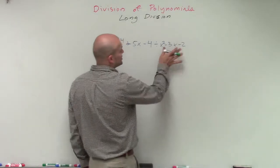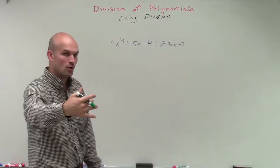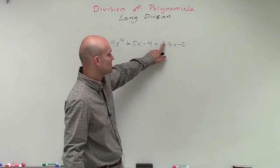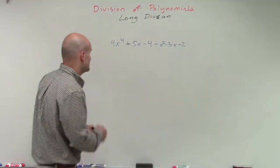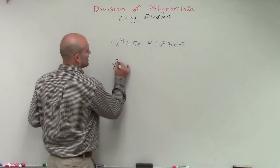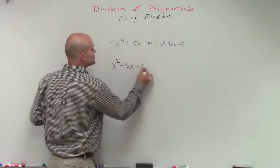The main important thing is we need to make sure our divisors are in descending order, right? You can see we have the highest exponent first, and then the next one, which would be x to the first, and then x to the zero, which would be your constant. So we're going to write that in there first. So we have x squared minus 3x minus 2. That's our divisor.